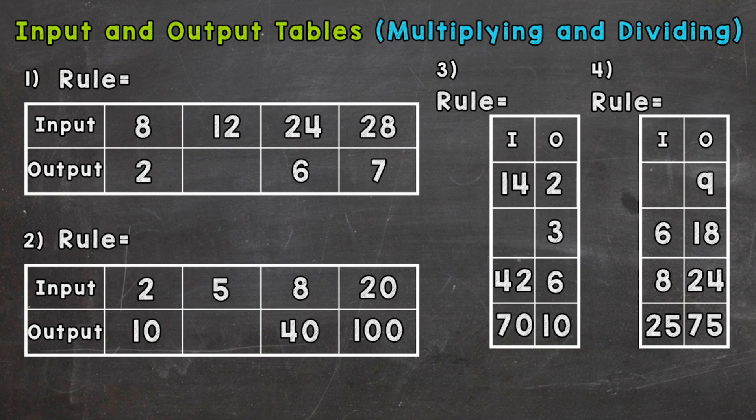As you can see on your screen, we have four tables, two horizontal side to side and two vertical up and down, that we're going to go through together. Each problem is going to have a blank section of the table that we need to fill in based on the rule that we need to find.